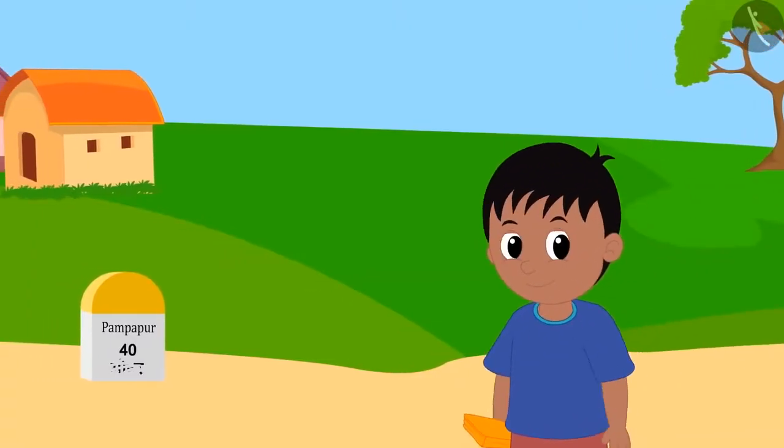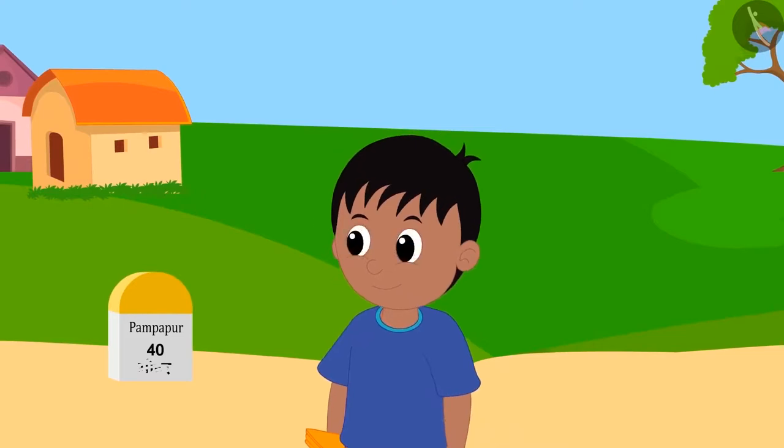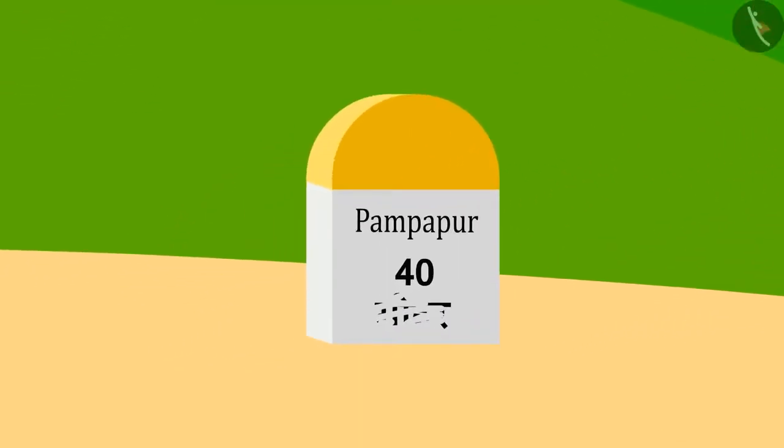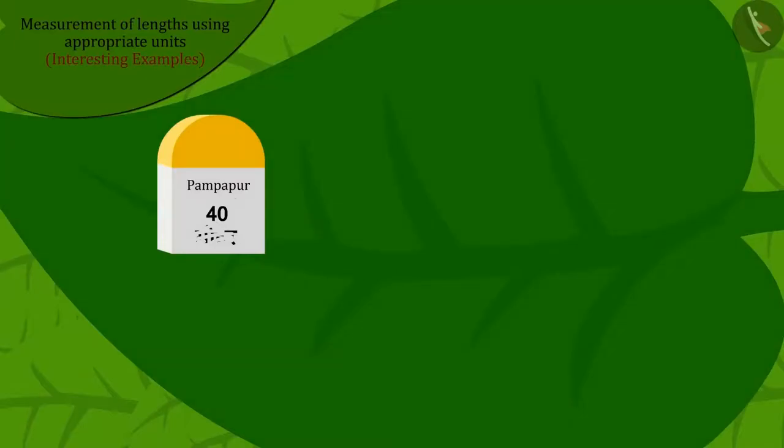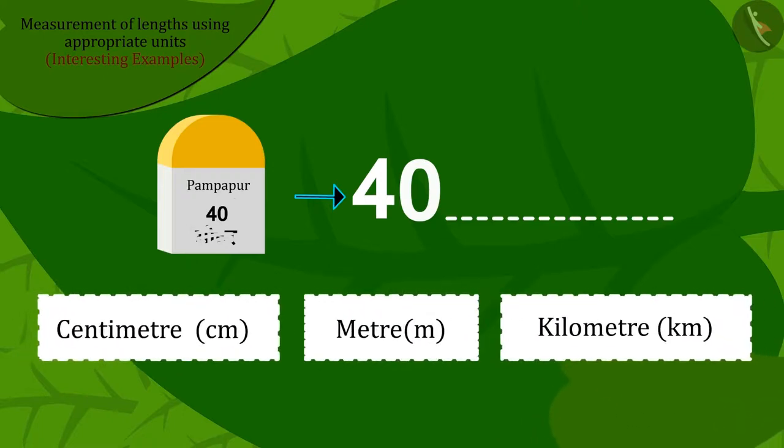Now Raju was about to reach his house. Just then, on the way, he saw it was written on a stone plate on the ground, Pampapur 40, but the unit below was erased. Raju started thinking that the distance from Pampapur to there was written on that stone. Now which unit should be written in front of 40, so that the people going there can get the correct idea of distance to Pampapur? Kids, can you help Raju?